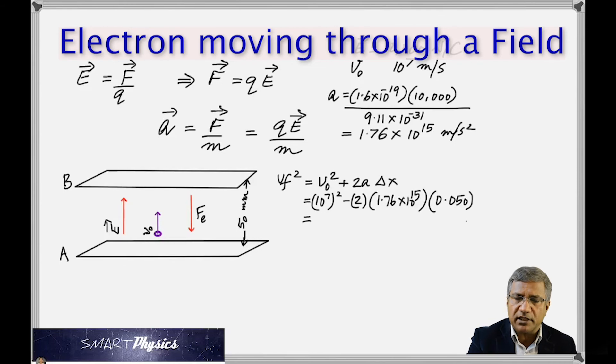So now mathematically, this negative quantity is bigger than the positive quantity. Which means when you take the square root, a negative number doesn't have a square root. Well, it's going to be imaginary. So what does that mean?